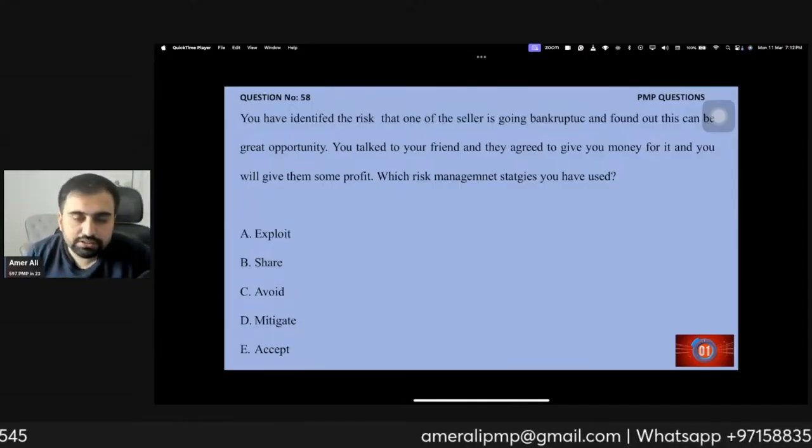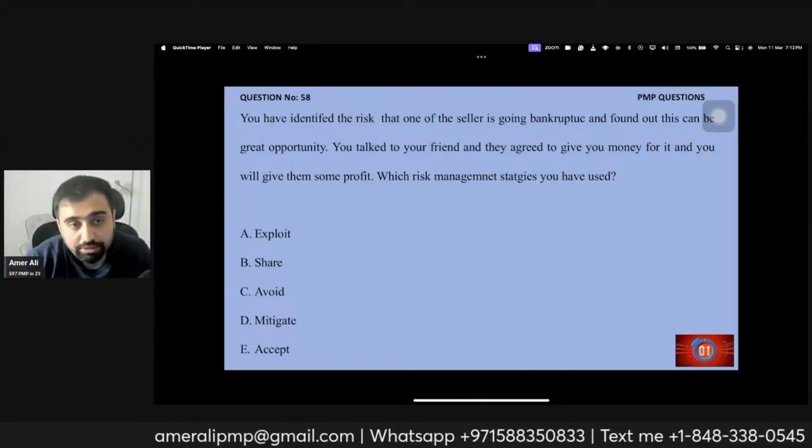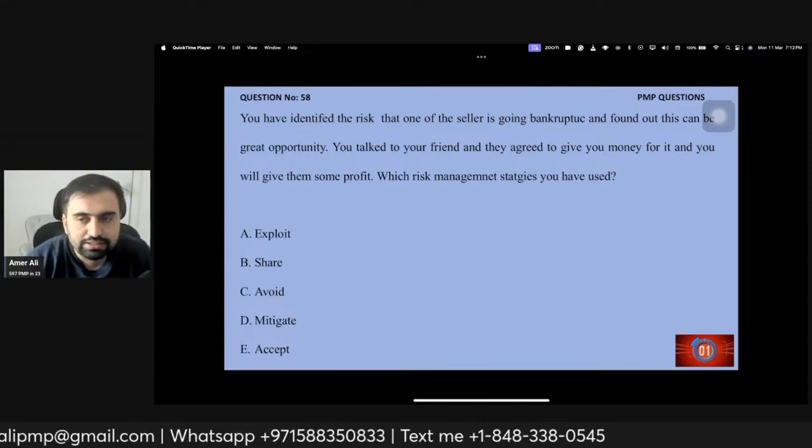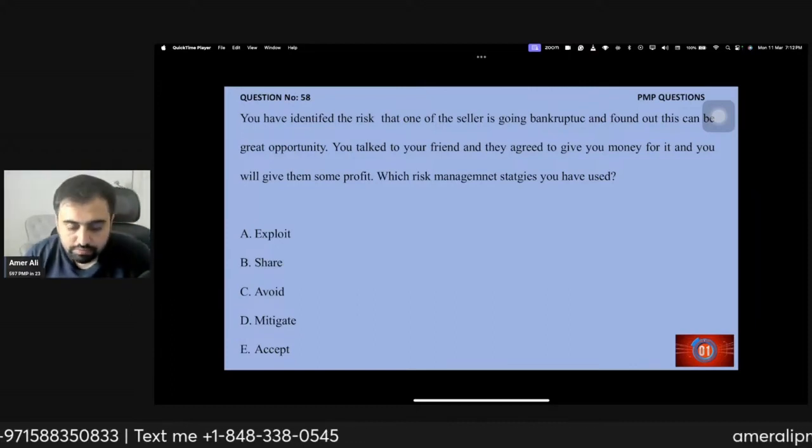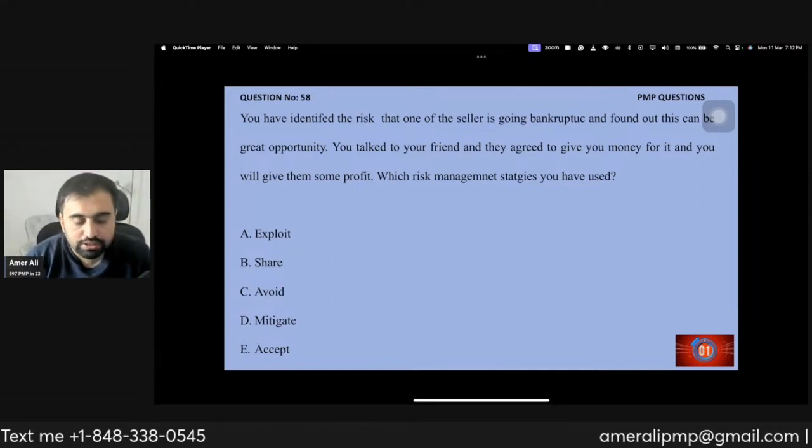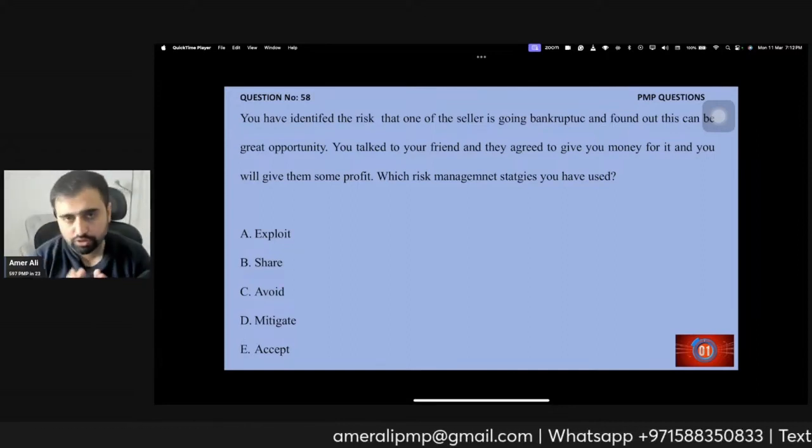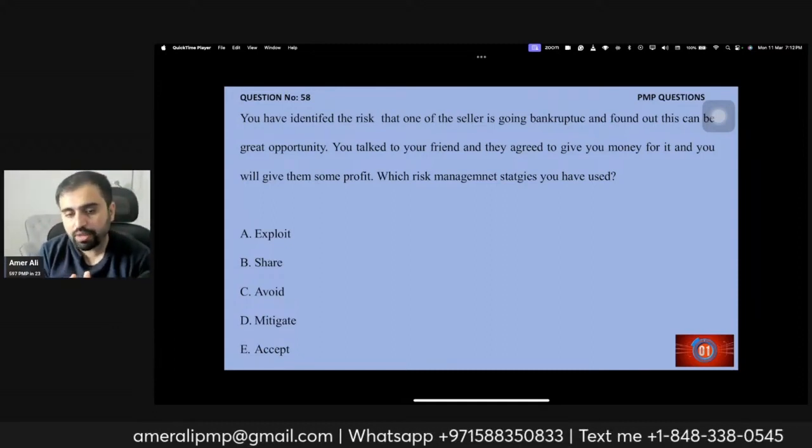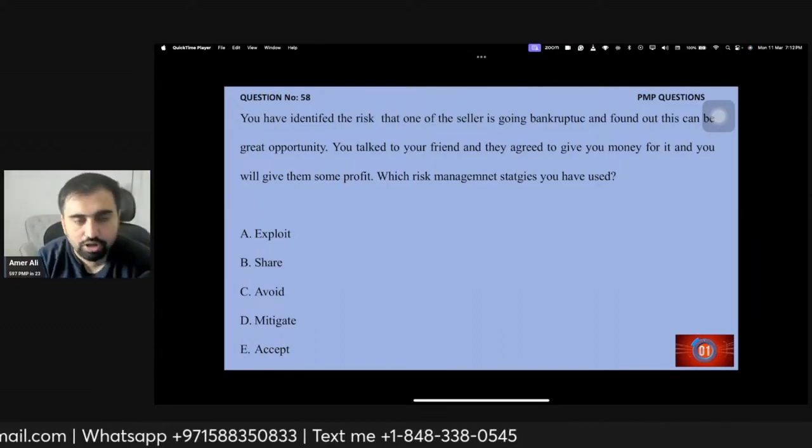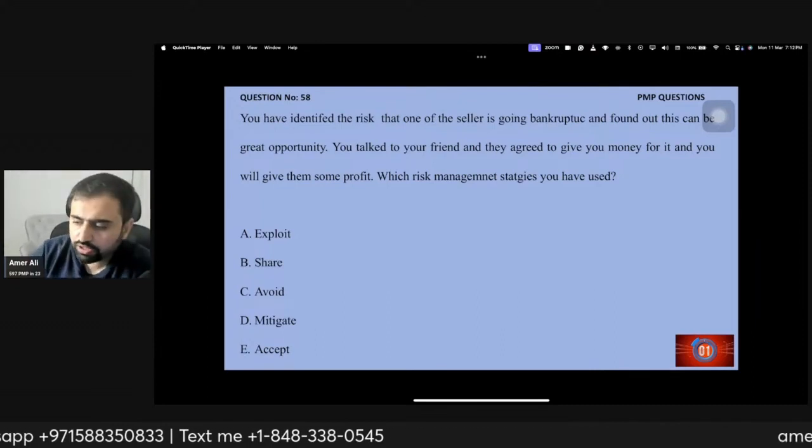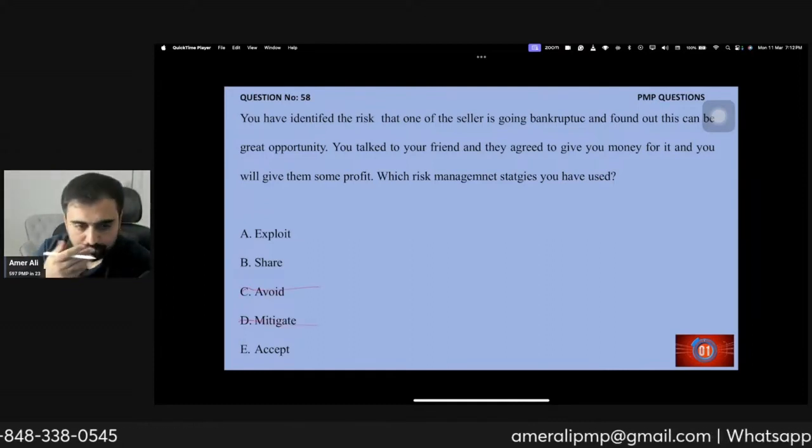You have identified a risk that one seller is going bankrupt and found out that this can be a great opportunity. You talk to your friend and they agree to give you money for it and you will give them some profit. Which strategy you have used? Now, very important thing: whenever we are solving question answers, we need to look into that, we need to identify that first of all is it a negative risk or a positive risk. So straightforward, it's not a negative risk. I can eliminate these two options.